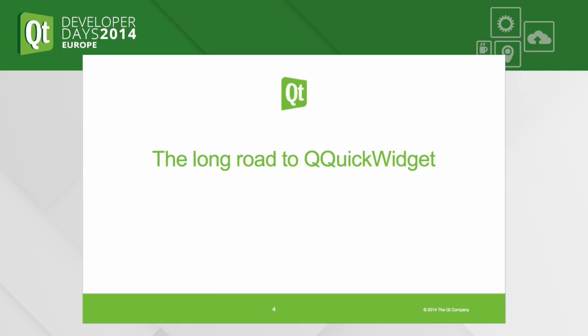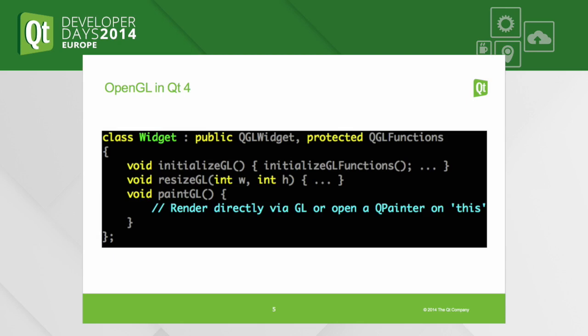First of all, QGLWidget. To understand all the changes done in Qt 5.3, it's good to look at how you have been doing OpenGL in Qt starting with Qt 4. The code snippet there is probably very familiar to some of you — initializeGL, resizeGL, paintGL — that's a well-known and familiar pattern.